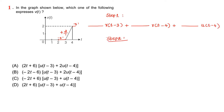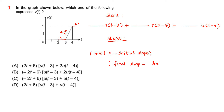Next, step number 2. Here we are going to find out the coefficient. Coefficient means final slope minus initial slope — this is for the ramp signal. That is the coefficient of R of t minus 3. For the step signal, how to find out the coefficient? Final amplitude minus initial amplitude.